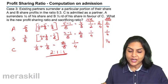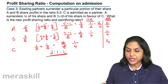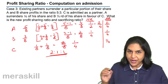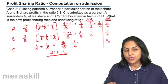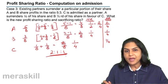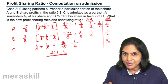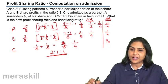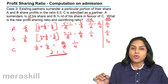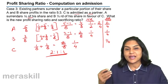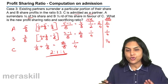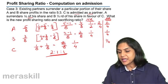These are different ways in which the profit-sharing ratio may have to be computed in case of admission. If nothing is mentioned, it is presumed that the old partners continue the same profit-sharing ratio between them as before. Otherwise, specific instructions are given as to how the share has been either surrendered by old partners or purchased by the new partner.